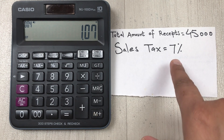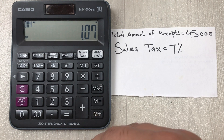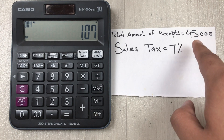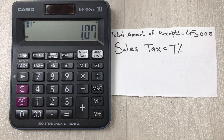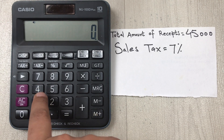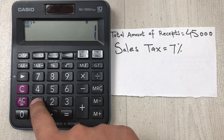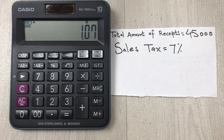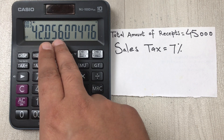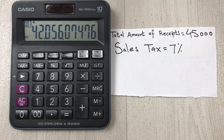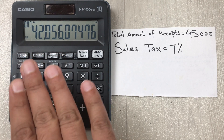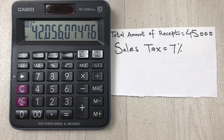The answer is 1.07. In the last step, we divide 45,000 by 1.07. Clear everything first, type 45,000, press the divide button, type 1.07, and press equals. Our final answer is $42,056.07 — that is your gross sales after deducting the sales tax of seven percent.